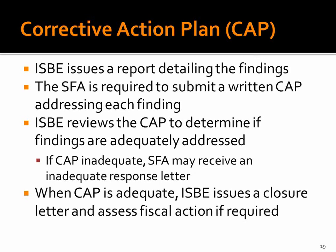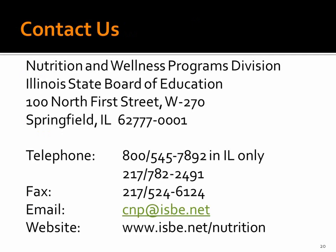When the corrective action plan is finally accepted, we will issue what we call a closure letter. If there was fiscal action over $600, it would be at this time that those funds would be requested. Sometimes the funds are recovered in future claims; at other times, we request that you send the funds back to the state by mailing a check. If you have any questions related to this training module, please feel free to contact our office via phone or email. We appreciate your time in viewing this training module and hope you find it helpful. Thank you very much.